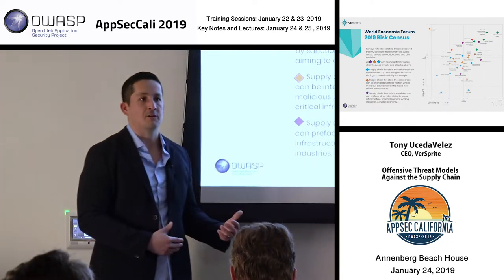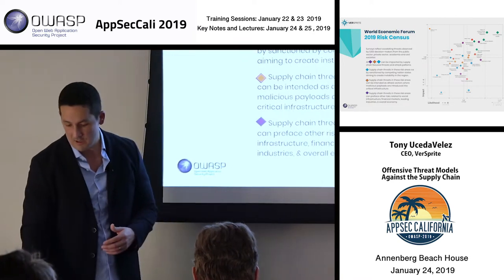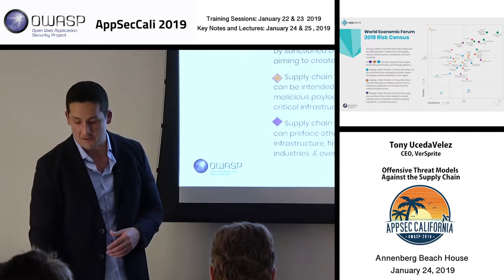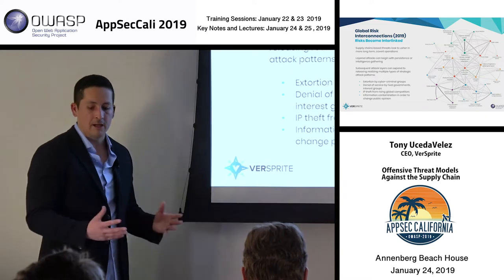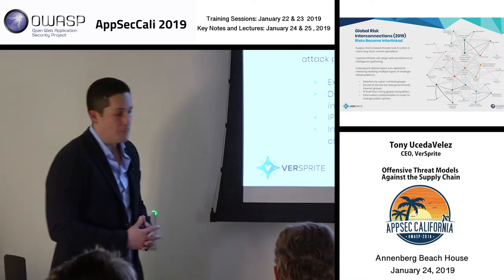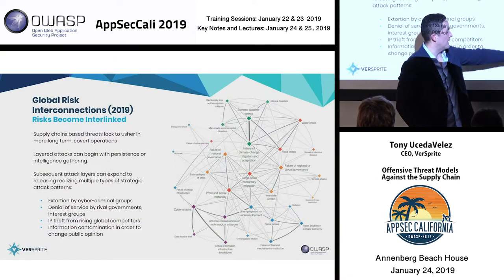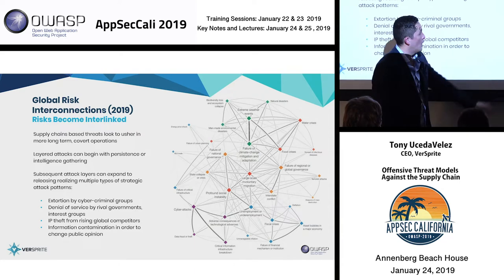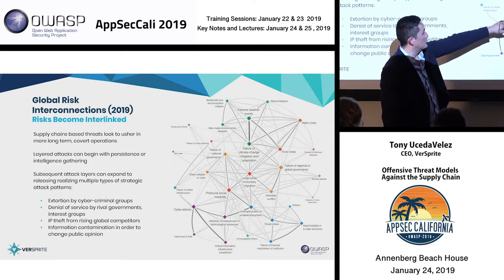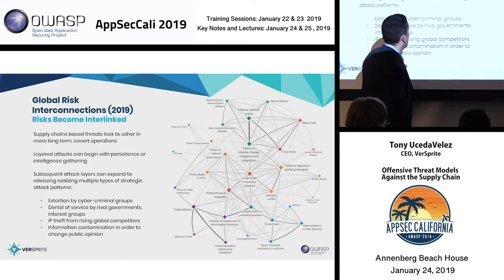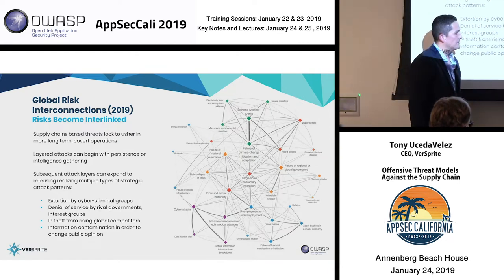These are all incentives for orchestrated attacks that will take place over the next couple of years. I like this diagram a lot because it really shows a lot of the interconnected aspects of cyber attacks with other things like the blue and orange triangles — let's talk about industrial control systems, let's talk about power grids.